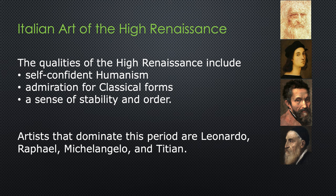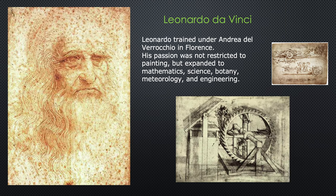You've probably heard of all of them, maybe not Titian. We're going to begin with the oldest, Leonardo da Vinci. Leonardo trained under Andrea del Verrocchio in Florence. His passion was not restricted to painting but expanded to mathematics, science, botany, meteorology, and engineering. He's widely regarded as the quintessential Renaissance man — a person with wide-ranging interests and abilities. His fame spread throughout Europe because of printing and paper. The King of France managed to lure him to his court where Leonardo spent his final days. Bucking the trend of reviving classical ideals, Leonardo relied on intellect and investigation. He was very innovative, forward-looking — a true progressive.